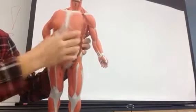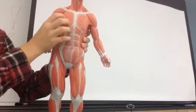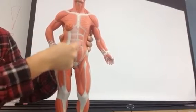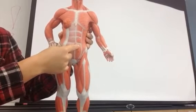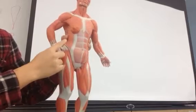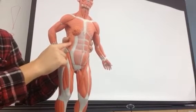Rectus abdominis. If you close him back up, you'll see the abs. That's your rectus abdominis. External oblique is the muscle right next to the rectus abdominis. That's external oblique.